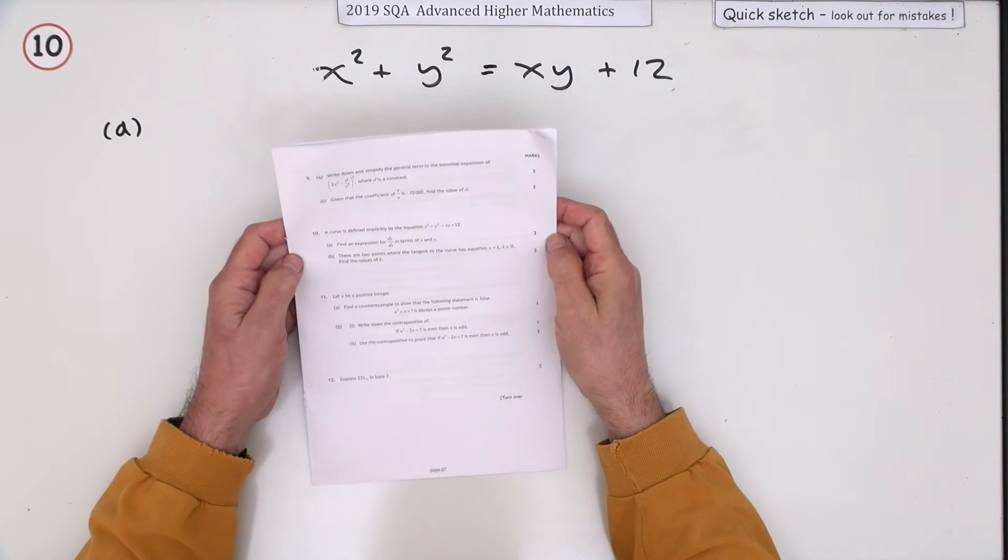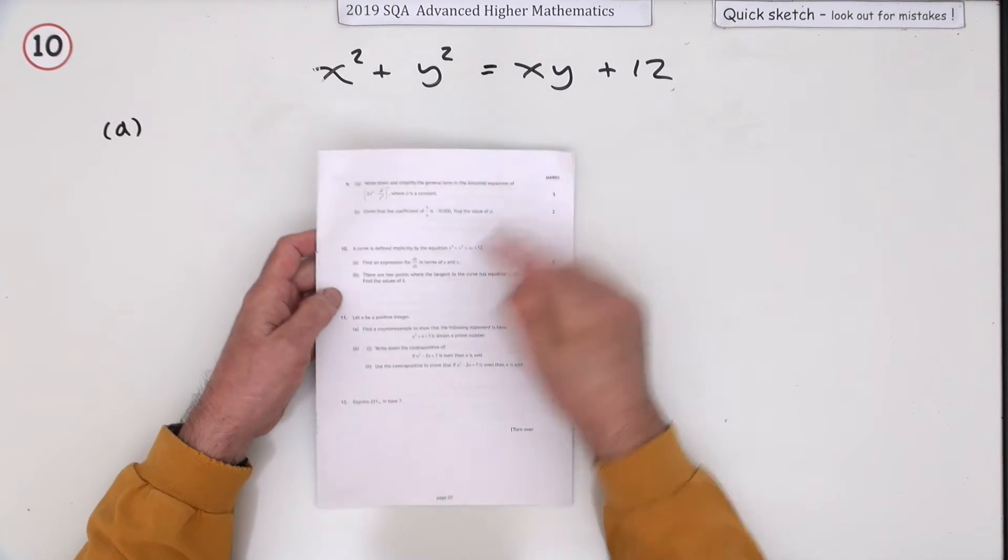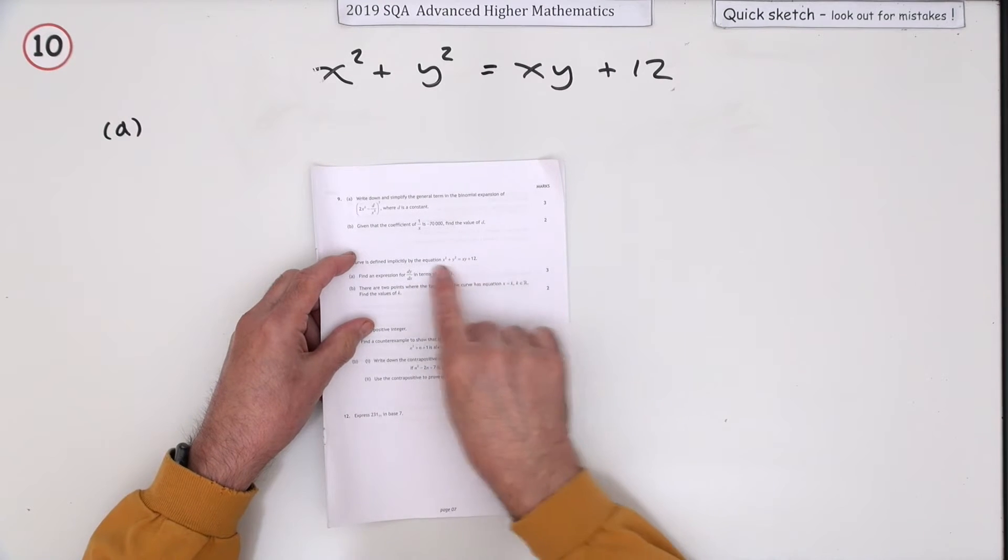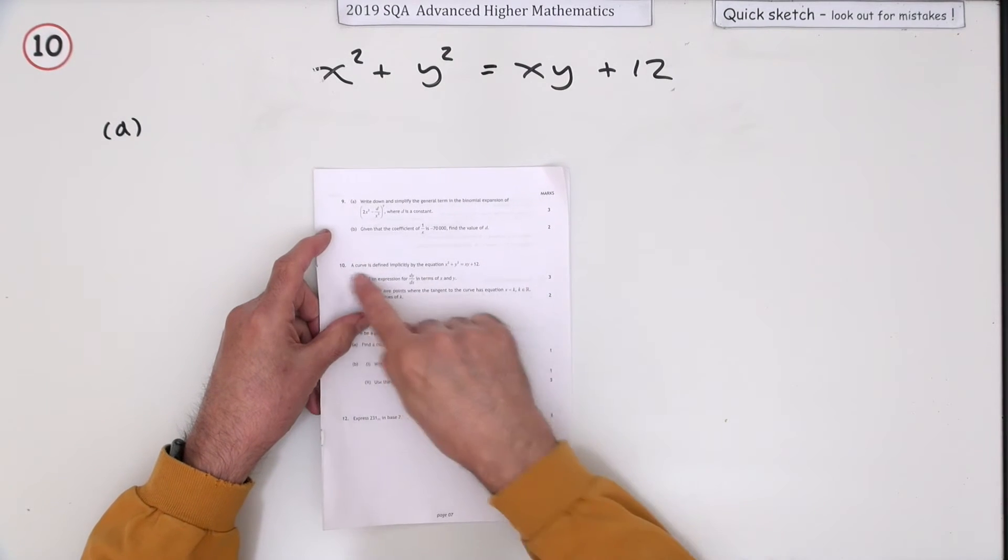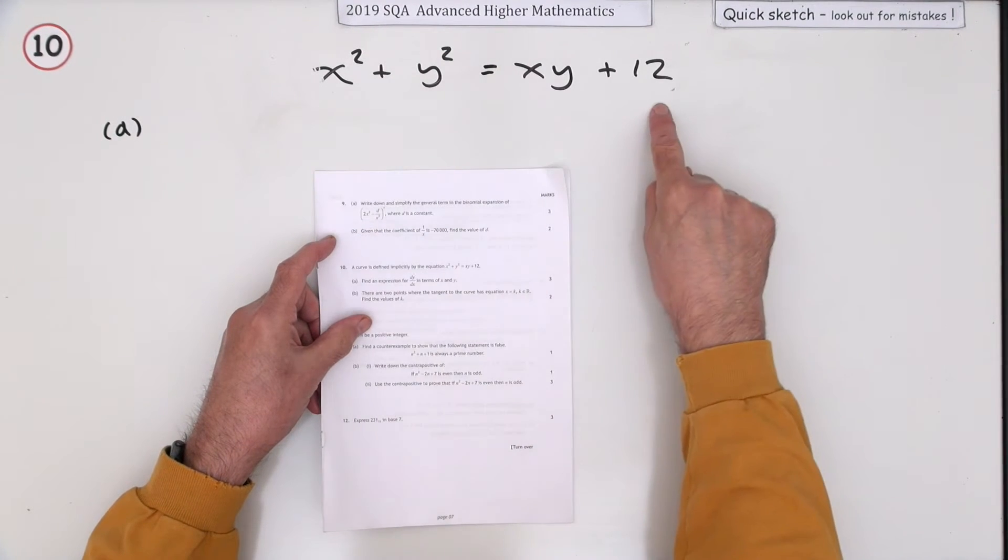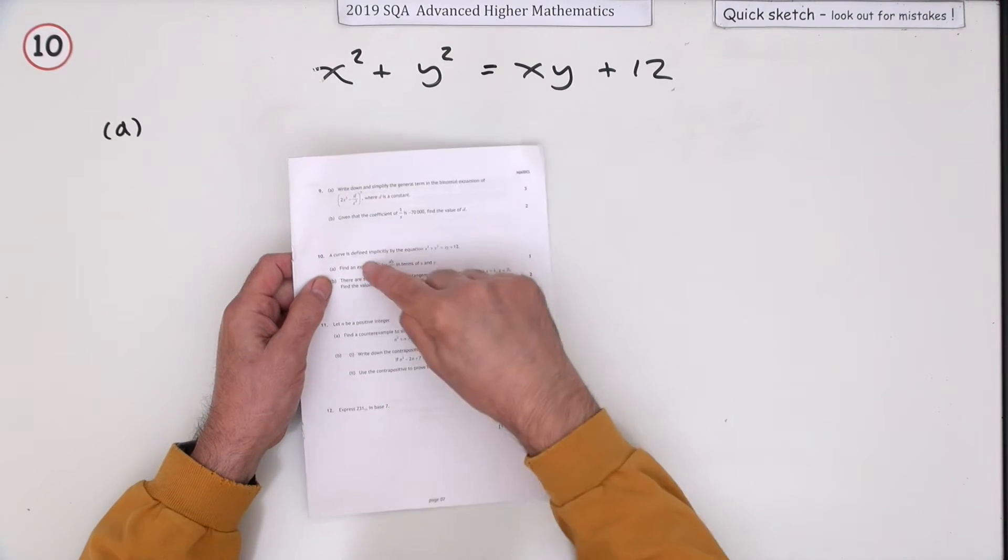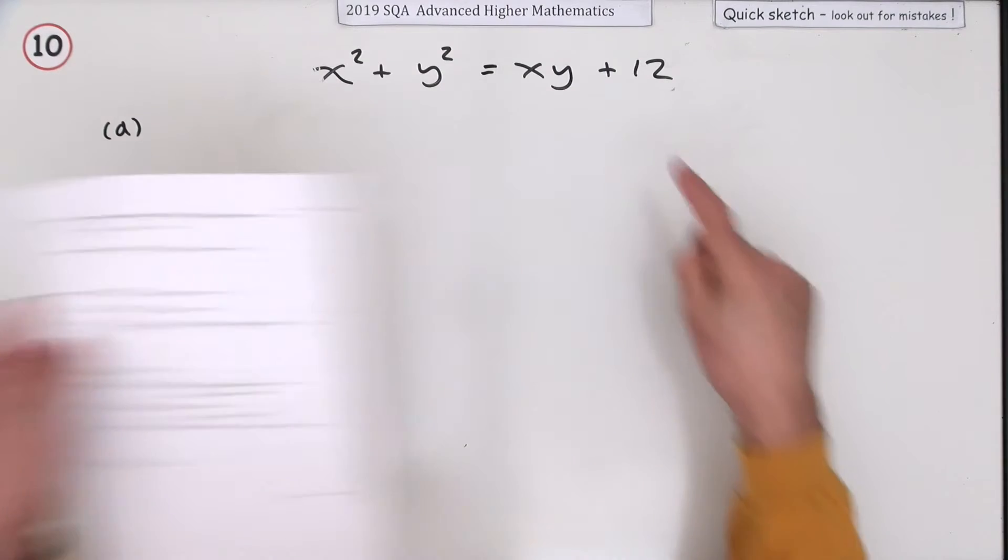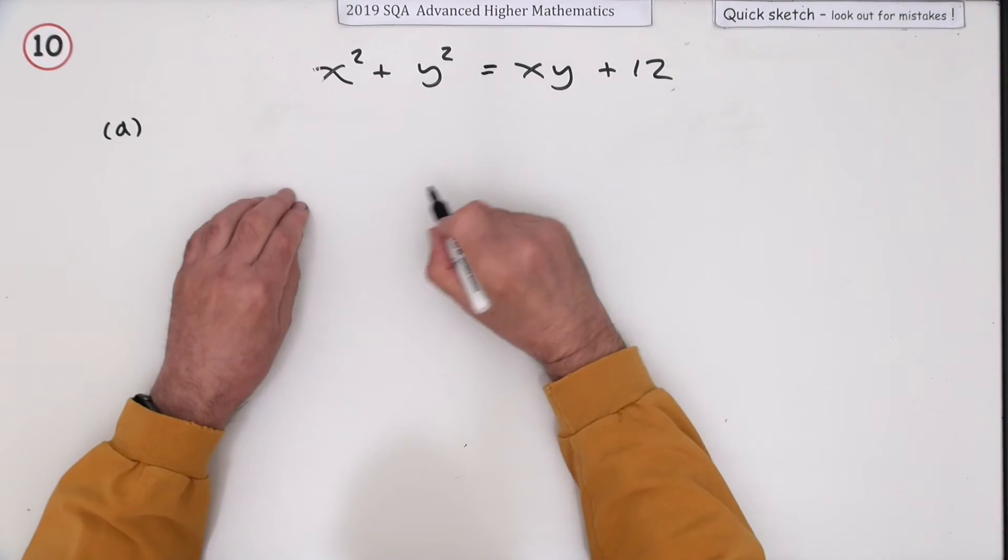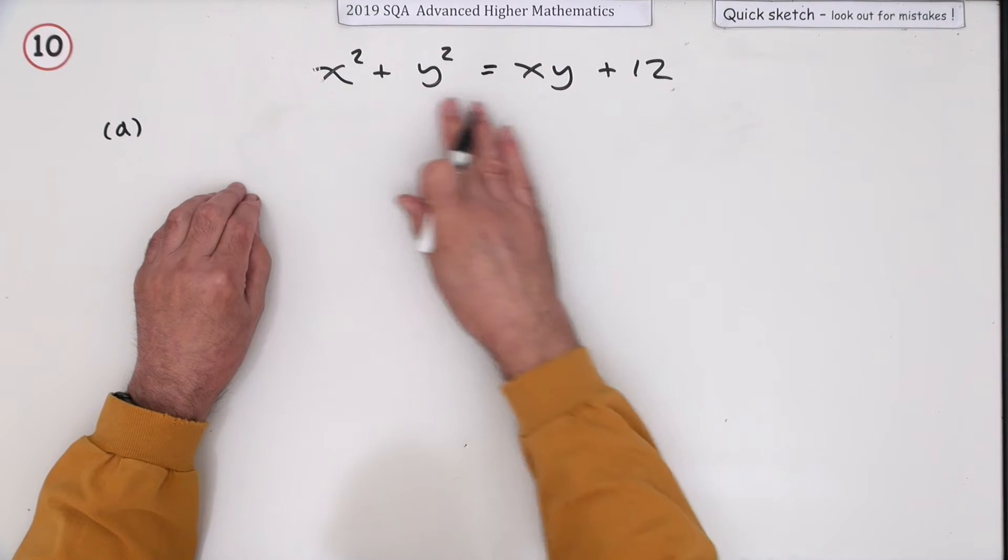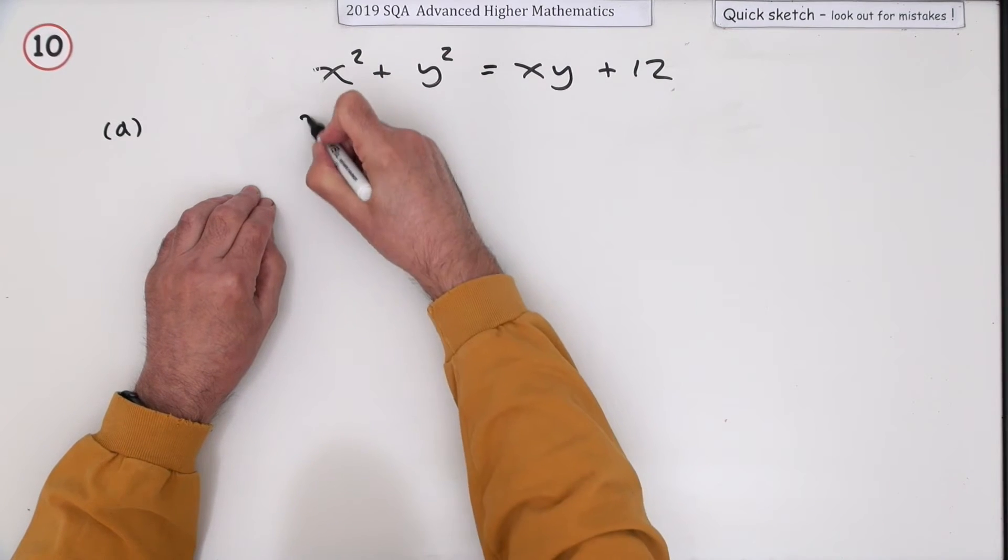Number 10 from the 2019 Advanced Higher Maths 5-mark question on implicit equations. A curve is defined implicitly by this equation; it's all jumbled up. For the first 4 marks, find an expression for dy/dx. Well, don't try and rearrange it to read y equals—just differentiate it term by term.